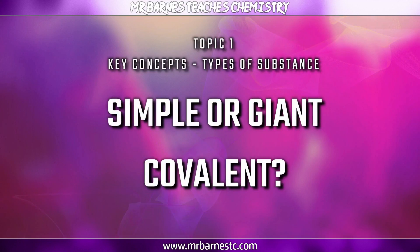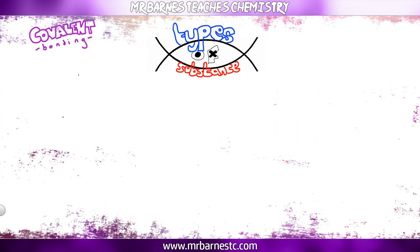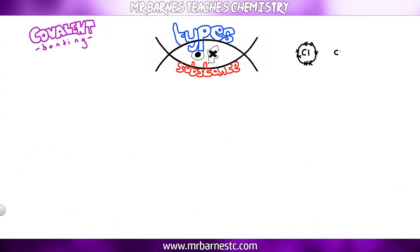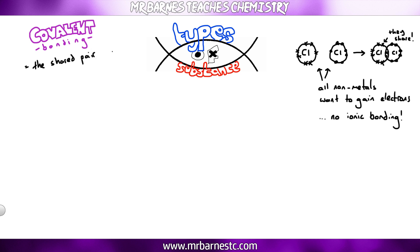The first thing we're going to focus on is what is covalent bonding. When you take two non-metals, for example two chlorine atoms, all non-metals want to gain electrons. If they want to gain electrons they can't form ionic bonds because there's nothing there to give them those electrons. So what they have to do is share them by overlapping shared pairs of electrons, and that is your definition of a covalent bond: the shared pair of electrons between non-metals.